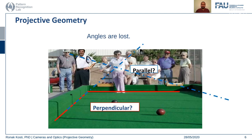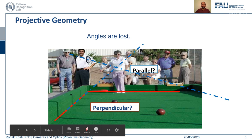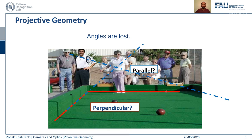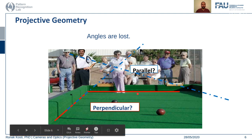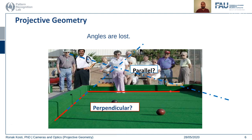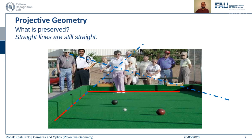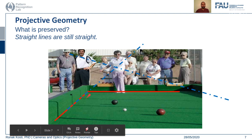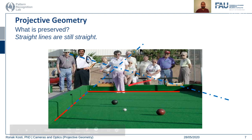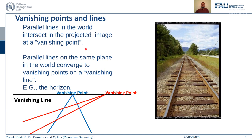Angles are also lost — for example, a red line that is clearly perpendicular in the real world is not perpendicular in the image plane. Similarly, blue lines that are parallel in the real world are not parallel in the image plane, so parallelism is also not preserved. What is preserved? Straight lines remain straight, as can be seen on the edges in the image.